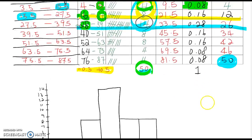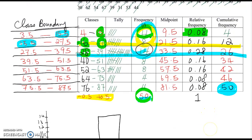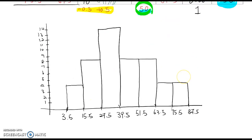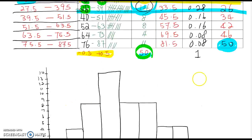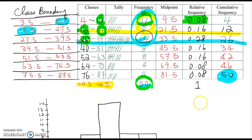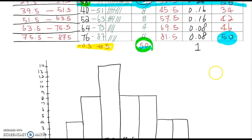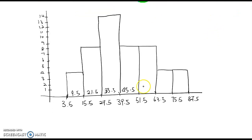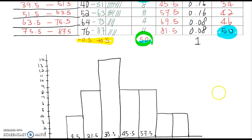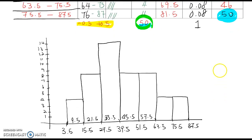And inside of each bar, you may put midpoint value, which is 9.5, 21.5, like that. So this is 9.5, 21.5, and 33.5, 45.5. So 33.5, and then 45.5, and 57.5, and then 69.5, and then 81.5.